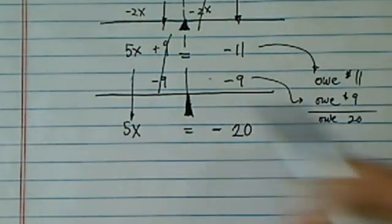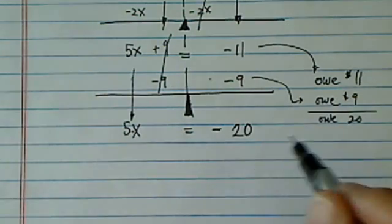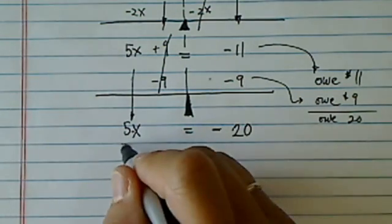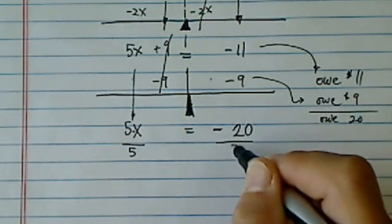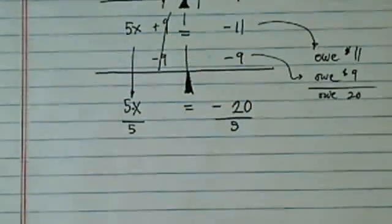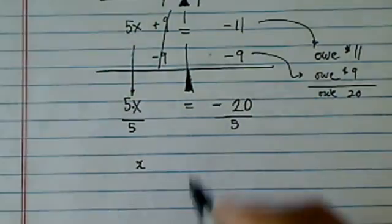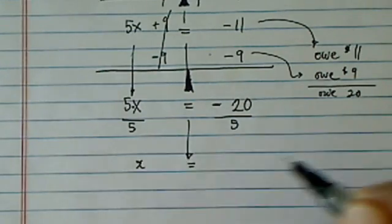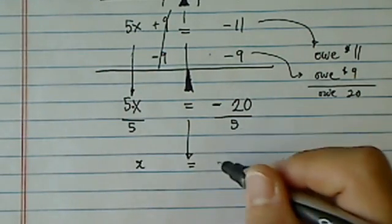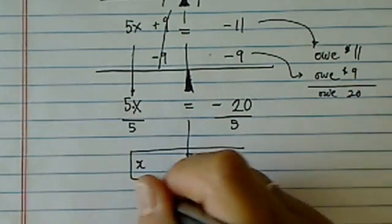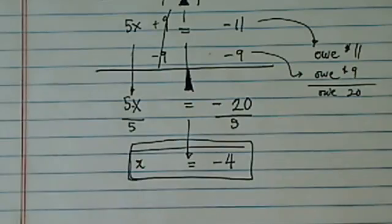And now, X is almost by itself. 5 times X is equal to minus 20. So what I'm going to do is divide it by 5, again, on both sides, because of my equal sign. And then here, 5 divided by 5 becomes X by itself. X is equal to minus 20 divided by 5, the answer is equal to minus 4.